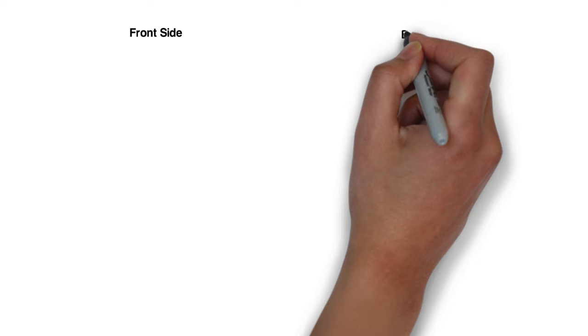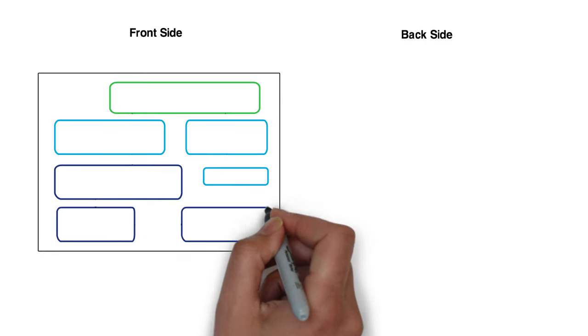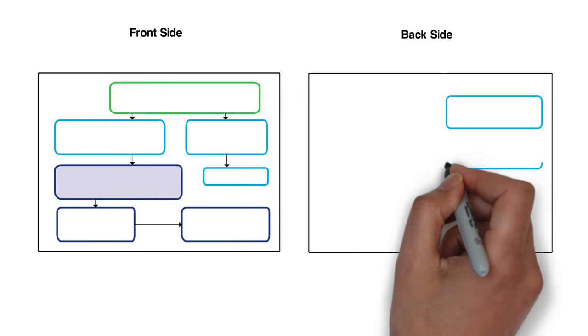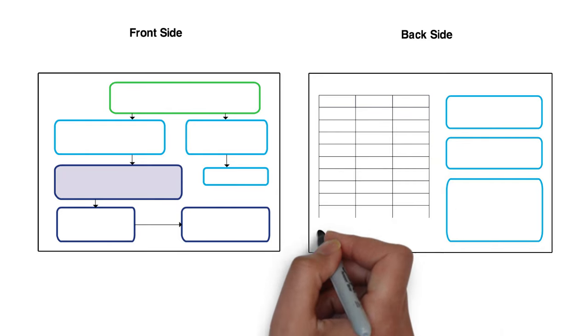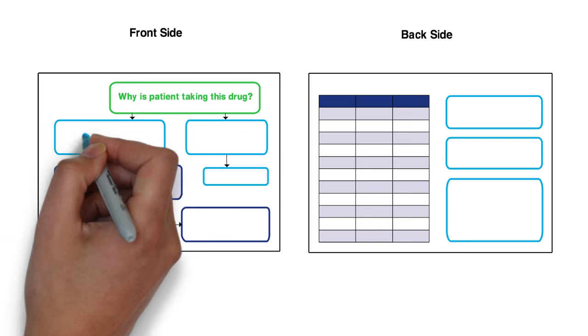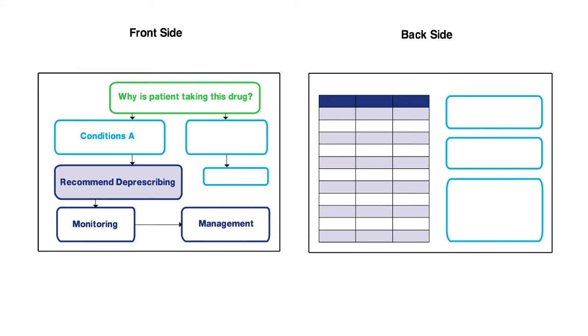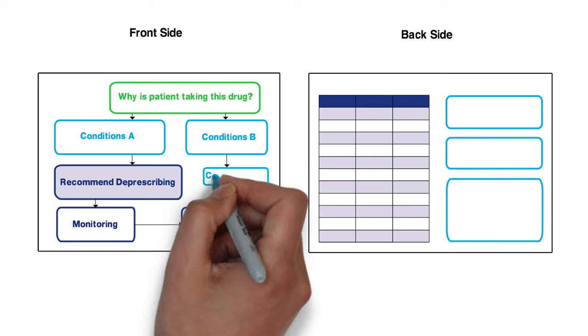To help health care providers use the recommendations outlined in the deprescribing guidelines, each team developed a two-page deprescribing algorithm for each of the guidelines. One side of the algorithm illustrates the deprescribing decisions, recommendations, monitoring, and management plans to carry out the process safely. It also includes the conditions for which deprescribing should not be considered using the guideline.